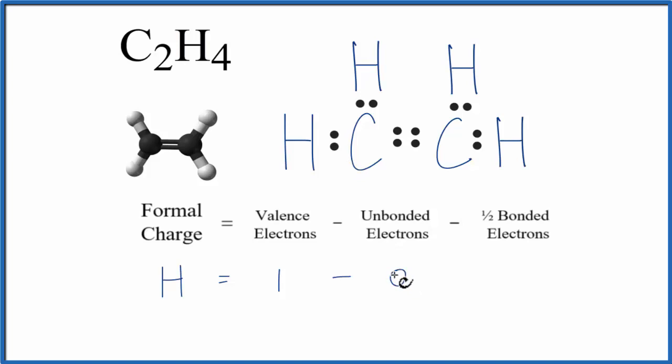So there are no unbonded valence electrons. Then we'll subtract one-half of the bonded valence electrons. These are the valence electrons between the atoms involved in the chemical bonds, so we have two of those.